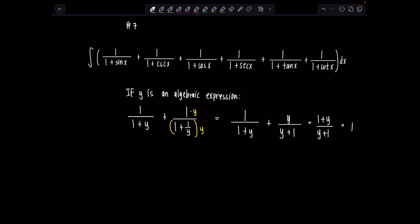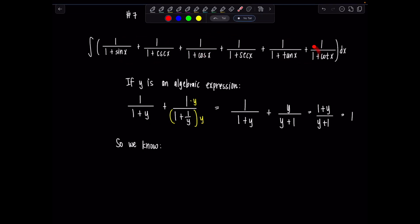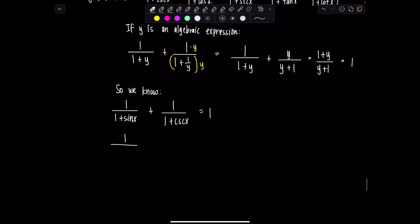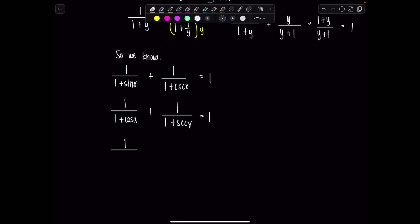So then what can be concluded? So we know now this is going to hold for three sets of terms in our integrand. 1 over 1 plus sine x plus 1 over 1 plus cosecant x, that would just be 1. And then 1 over 1 plus cosine x plus 1 over 1 plus secant x, that would just give us 1. And similarly, 1 over 1 plus tangent x plus 1 over 1 plus cotangent x also gives us 1.